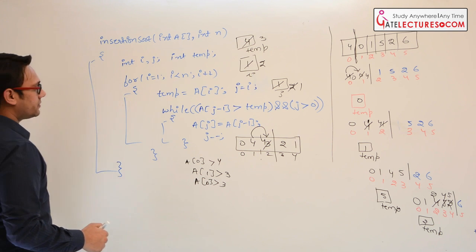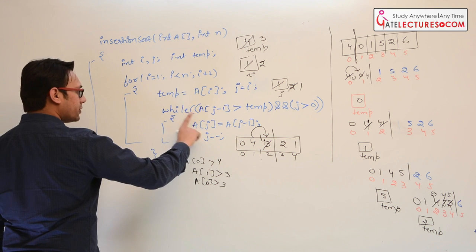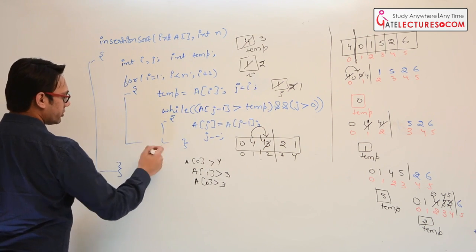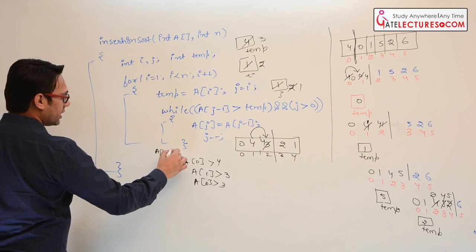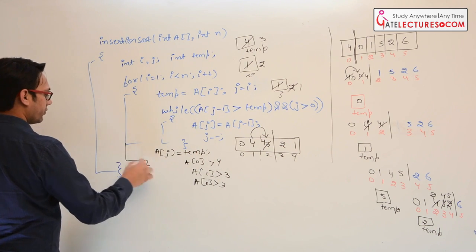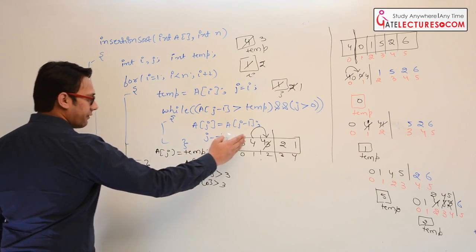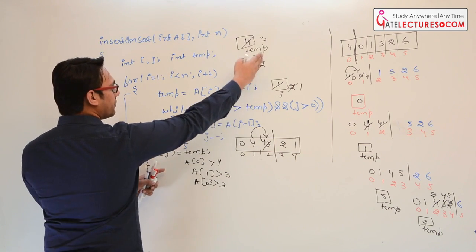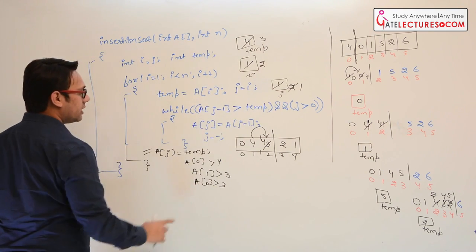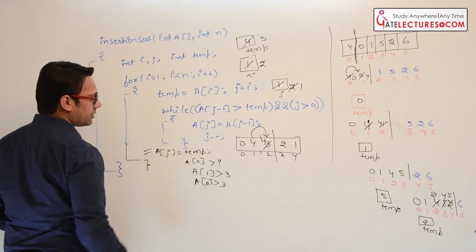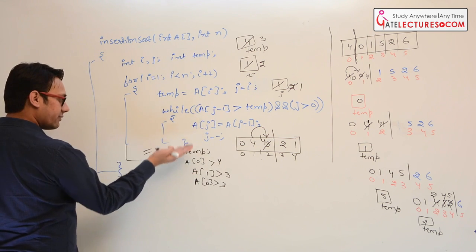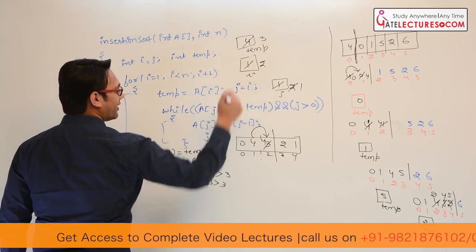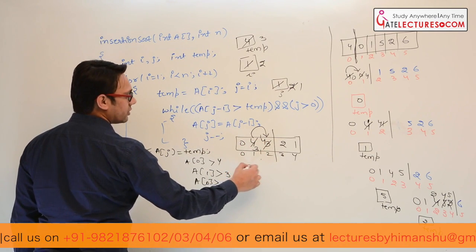After the while loop, execute A[j] equals temp. j is 1, so store 3 at index location 1. Elements are now 0, 3, 4, 2, 1. Next, i becomes 3, j becomes 3, and temp stores 2. Check: A[j-1] is A[2] which is 4, and 4 is greater than 2 — true. Shift 4 here. j becomes 2. Check: A[1] is 3, and 3 is greater than 2 — true. Shift 3 here. j becomes 1.